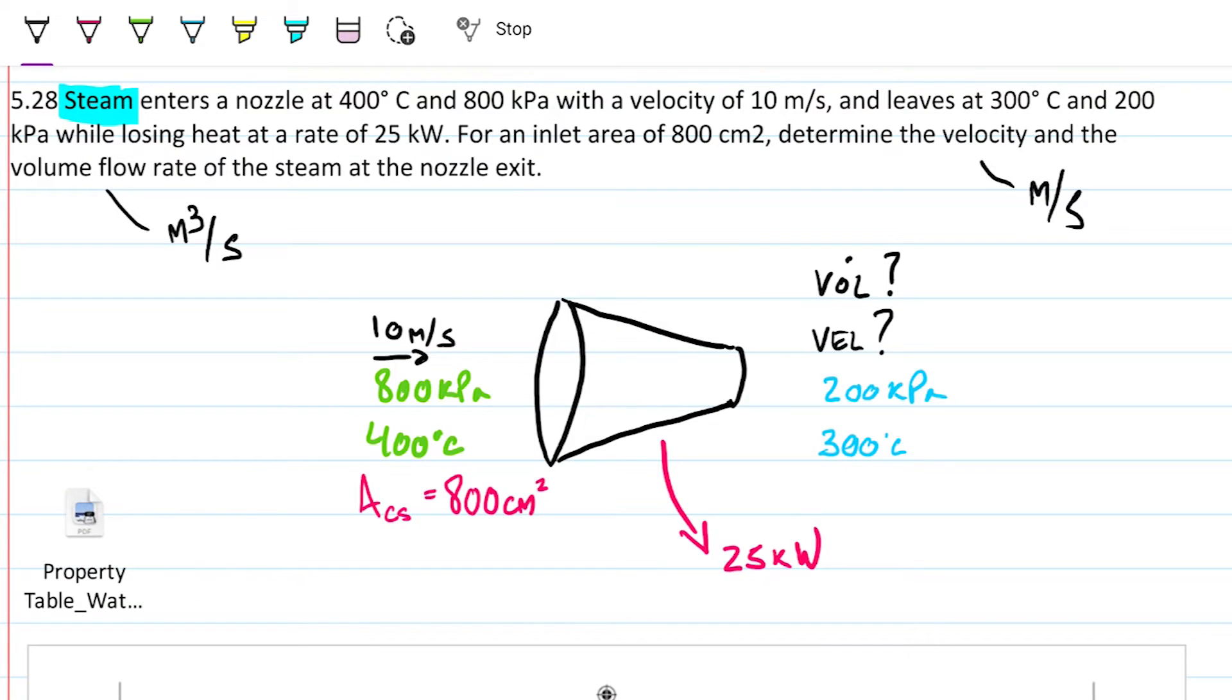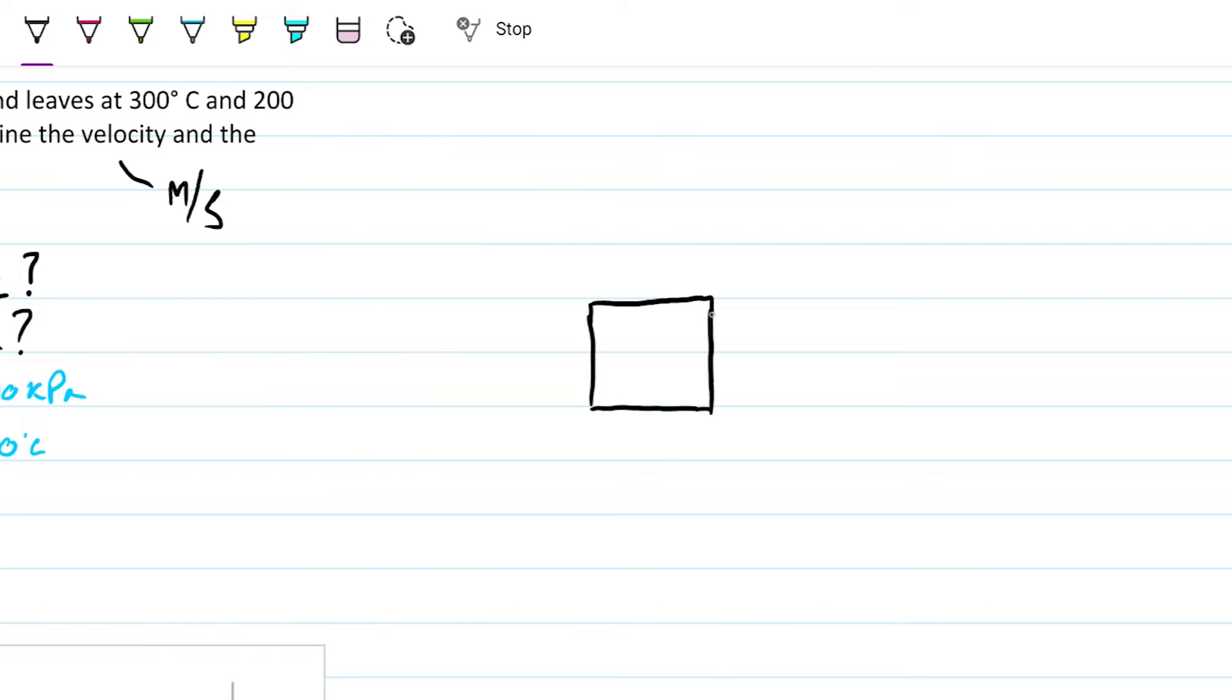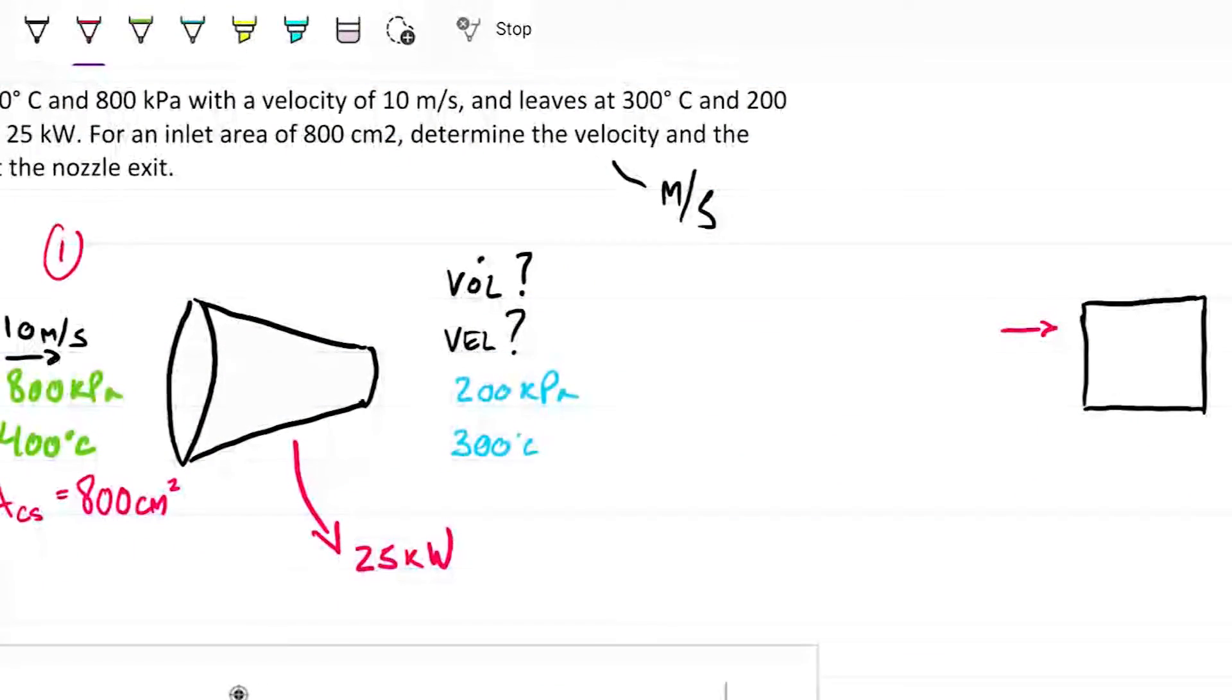What I'm going to do is simplify this diagram by just drawing a box. This is my new nozzle, just a box. In this box, I'm going to put everything that's entering - all the mass that's entering and leaving and all the energy that's entering and leaving. So I have my mass. I'm going to call this state one, I'm going to call this state two, and I'm going to call this just Q.